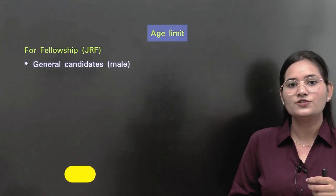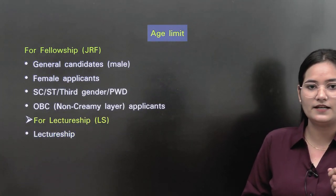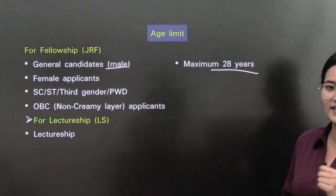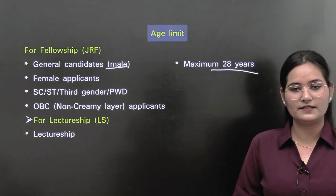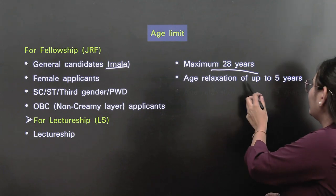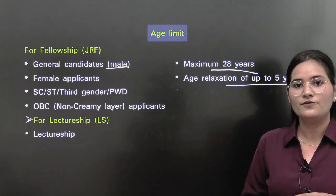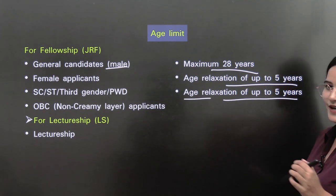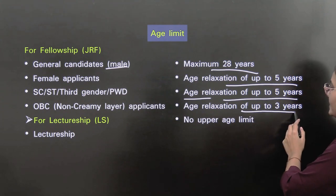Regarding age limit: for CSIR JRF category, the age limit for general category males is 28 years. For OBC, SC, ST, and PWD candidates, there is a 5-year age relaxation, meaning you are eligible up to 33 years for CSIR JRF. For SC, ST, general third category, or PWD, again 5 years relaxation. For OBC non-creamy layer applicants, there is 3 years relaxation.